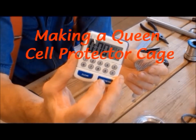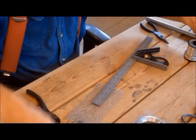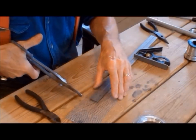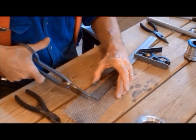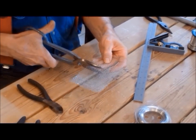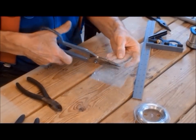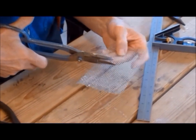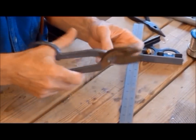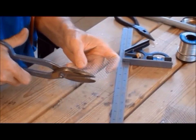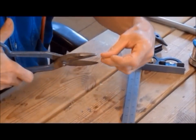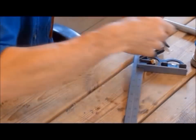The queen cell protector cage is cut from a scrap piece of number 8 hardware cloth, which is a wire mesh with 8 squares per inch. This wire can be found as a woven wire mesh or a welded wire mesh. The welded wire mesh is much stronger and the one you want. Cut a piece about 2 3 quarter or 3 inches square. The size is not particularly important. Using such a small piece is one reason why you never throw away scrap hardware cloth from other projects. You never know when you may need it.